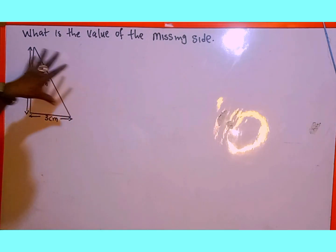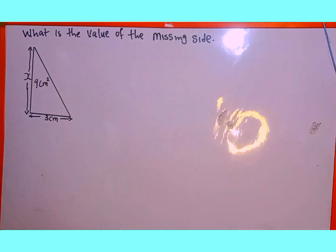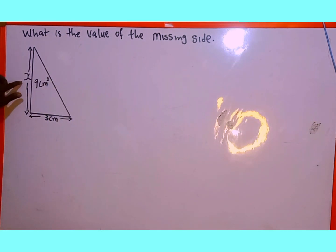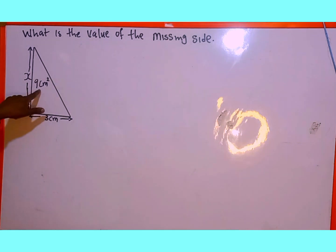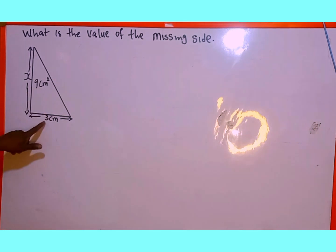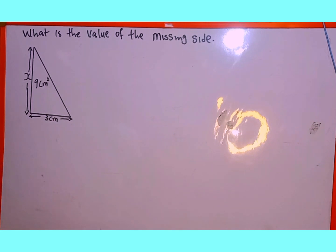The question on the board reads: what is the value of the missing side of this right angle triangle? The missing side is denoted as x, the area is 9 centimeters squared, and 3 centimeters is the baseline.